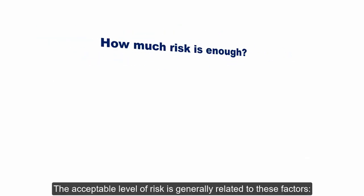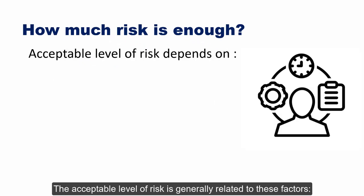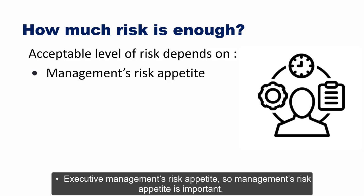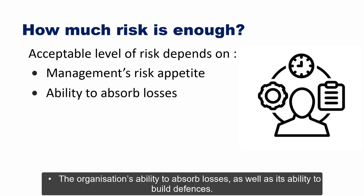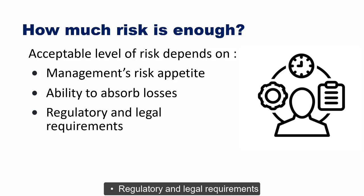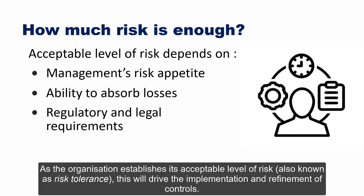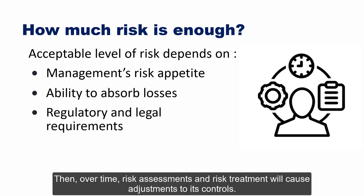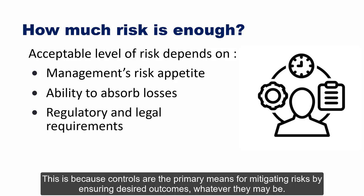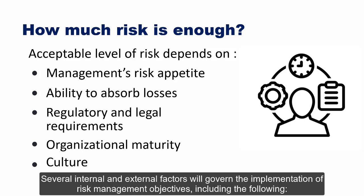The acceptable level of risk is generally related to executive management's risk appetite, the organization's ability to absorb losses, and its ability to build defenses, as well as regulatory and legal requirements. As the organization establishes its acceptable level of risk — also known as risk tolerance — this will drive the implementation and refinement of controls. Over time, risk assessments and risk treatment will cause adjustments to controls, since controls are the primary means for mitigating risks.